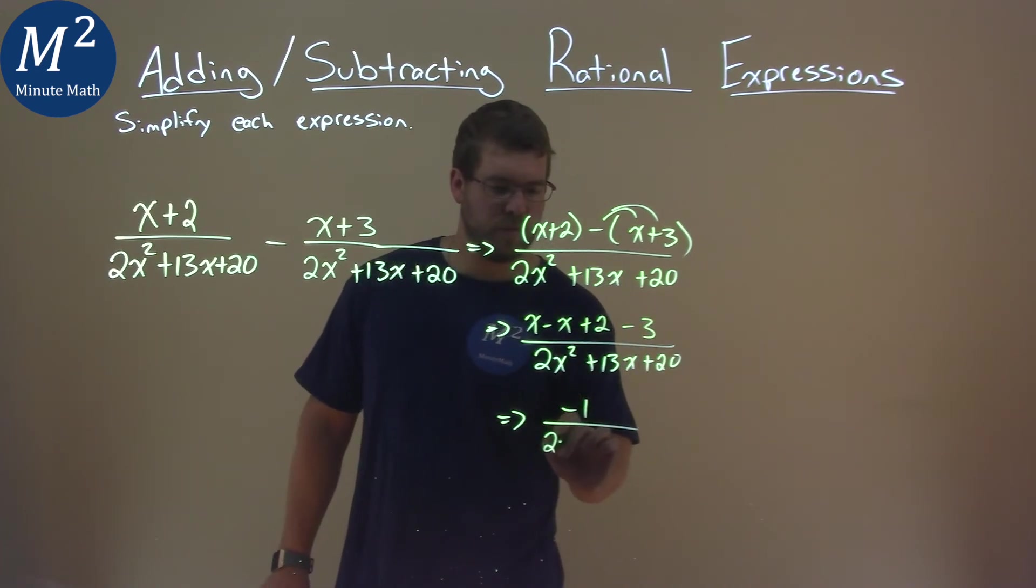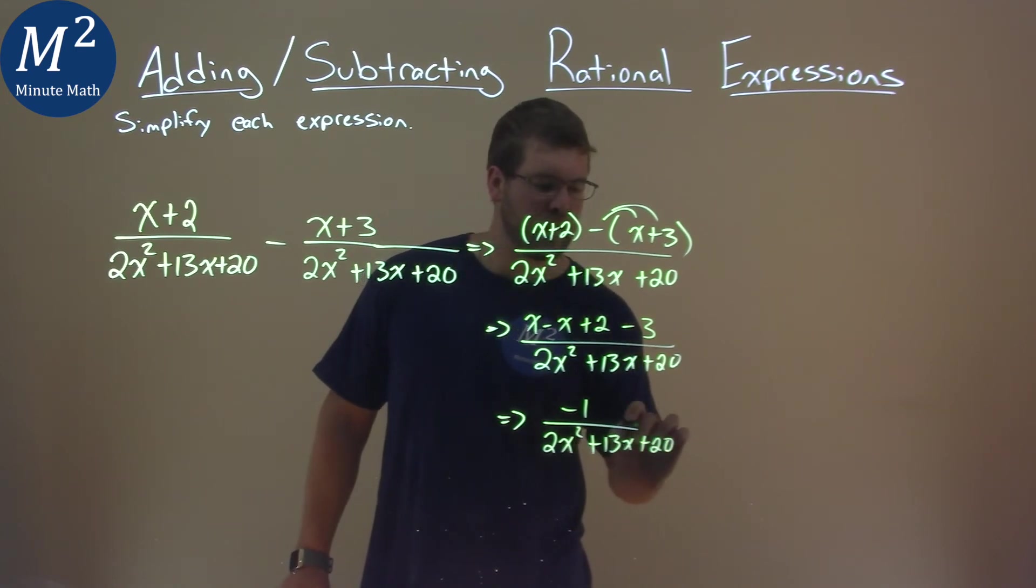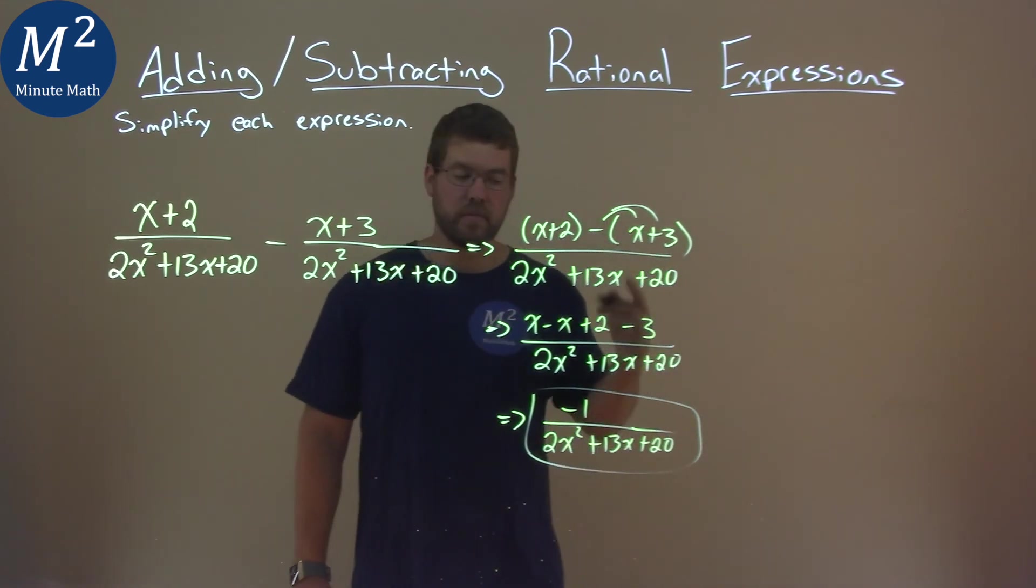Denominator stays the same. 2x squared plus 13x plus 20. And we now have our final answer here. Negative 1 over 2x squared plus 13x plus 20.